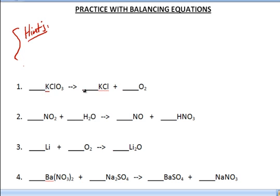First one, we've got 1K, 1K, 1Cl, 1Cl, and then we have a 3 and a 2. And one of the hints that I said was whenever you have a 2 and a 3 or a 3 and a 2, always try to make the grand total 6. So I'm going to make this oxygen 6 by putting a 2 in front and this oxygen is going to be 6 by putting a 3 in front.